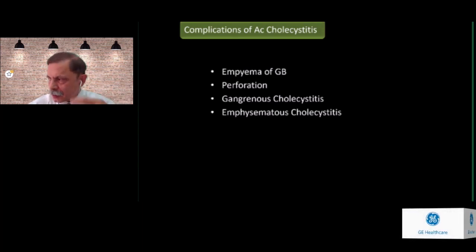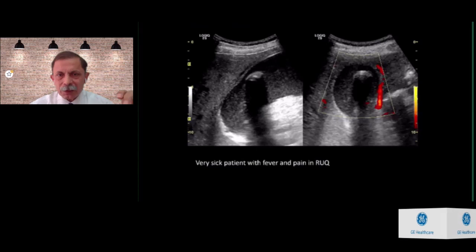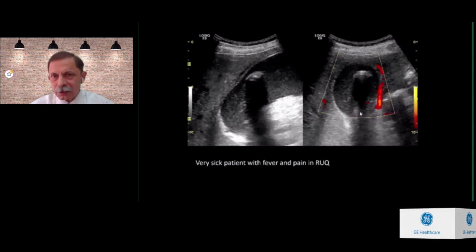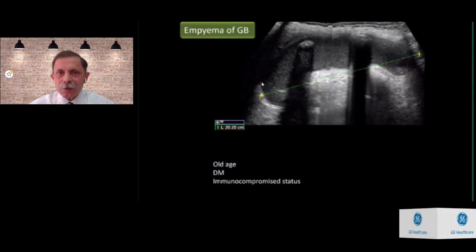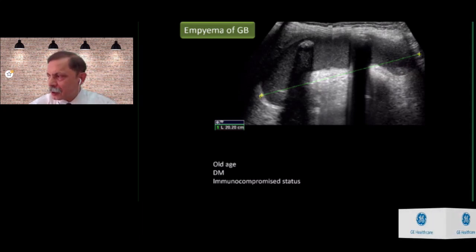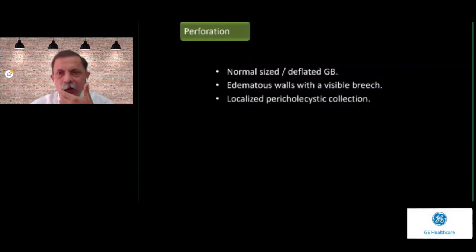Acute cholecystitis not treated in time can lead to complications: empyema of the gallbladder, perforation, gangrenous cholecystitis, and emphysematous cholecystitis. This very sick patient with fever and severe right upper quadrant pain shows a distended gallbladder measuring around 20 cm with edematous walls full of echogenic bile. Whether this is pus or thick inspissated bile, clinical evidence suggests empyema. Risk factors include old age, diabetes mellitus, and immunocompromised status. When the gallbladder perforates, the distension may reduce but edematous walls, a breach in the wall, and a small pericholecystic collection will be visible.